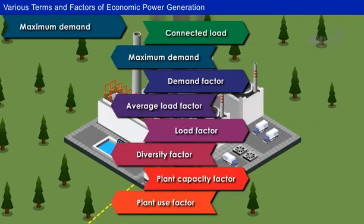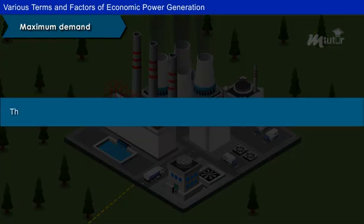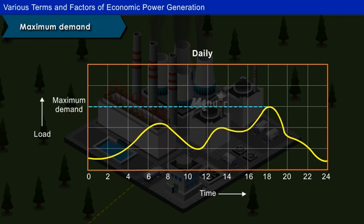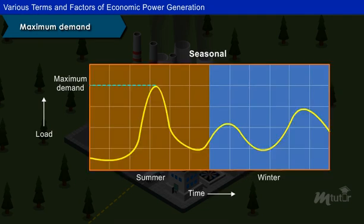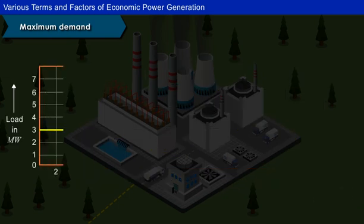Maximum Demand: The load on the power station varies from time to time. The maximum of all the demands that have occurred during a period is called the maximum demand. This can be calculated on a daily, weekly, seasonal, or annual basis.